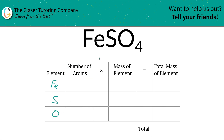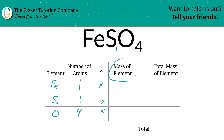Next, we write down the number of atoms of each element. We look at the subscripts. At the bottom of iron there is a one, so there's one iron. The subscript on sulfur is also one, so there's one sulfur. At the bottom of oxygen there's a four, so there are four oxygen atoms.